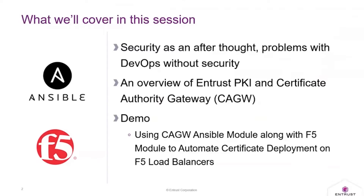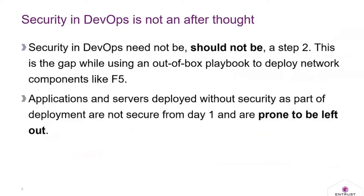We'll have a quick look at why security as an afterthought is a problem. Then I'll go over some Entrust PKI components including the CA Gateway, which is our API interface. Finally, we'll dive into a demonstration of using the CA Gateway Ansible module that Entrust has developed, and how you can leverage it with F5 Ansible modules to have a completely automated deployment of an F5 load balancer with cryptographic credentials issued at deployment itself.